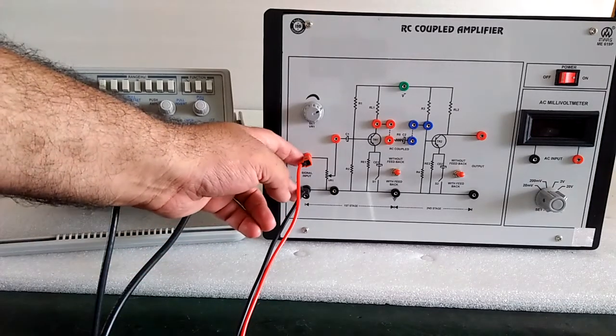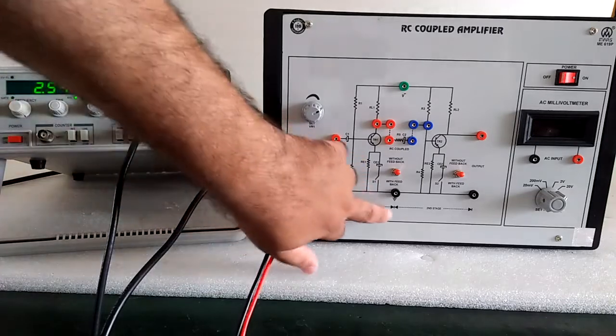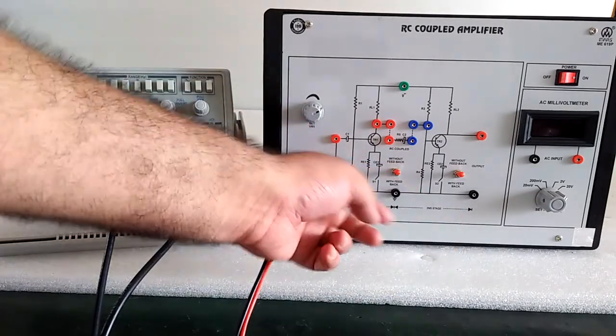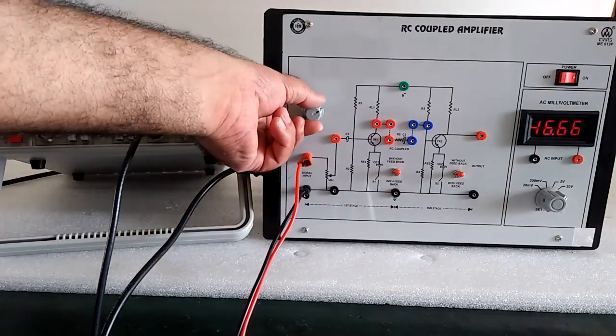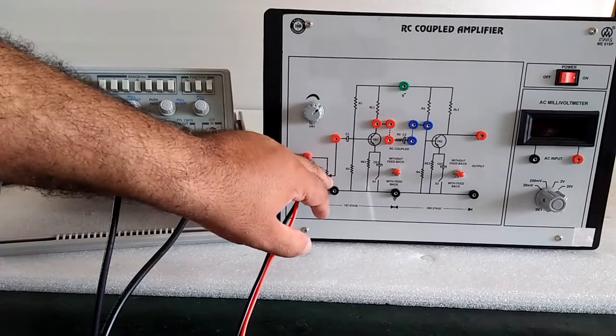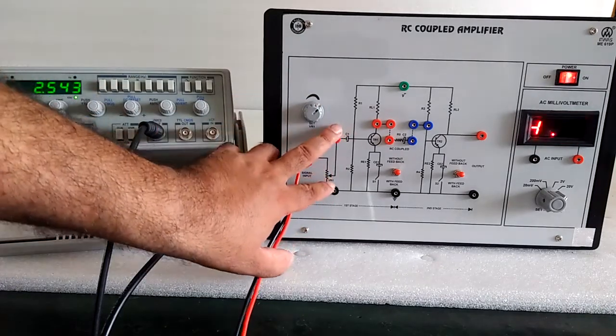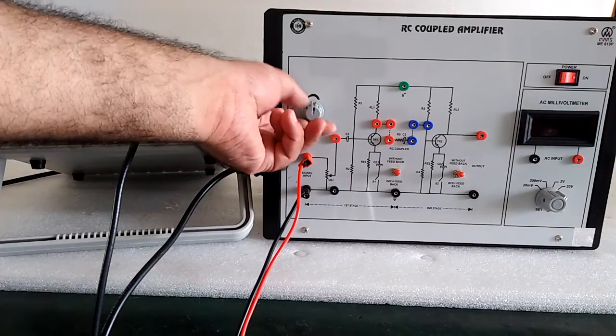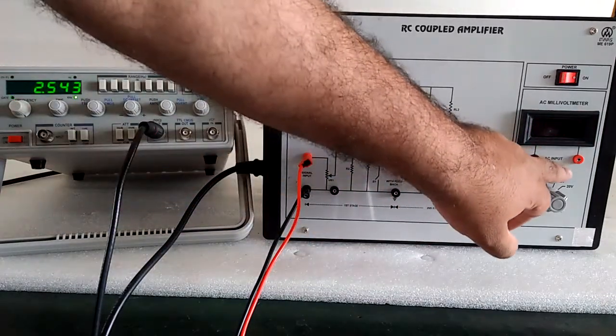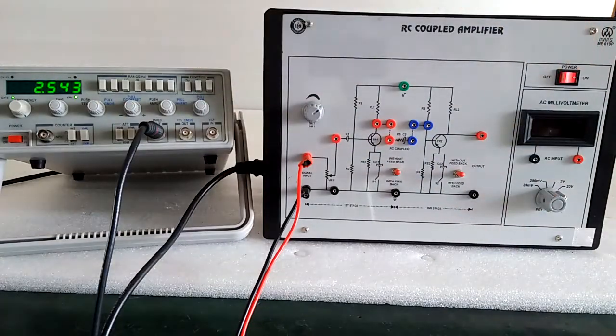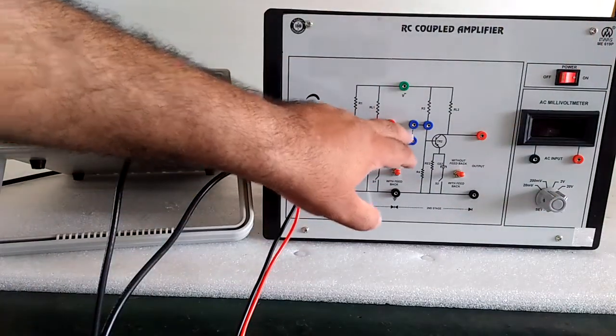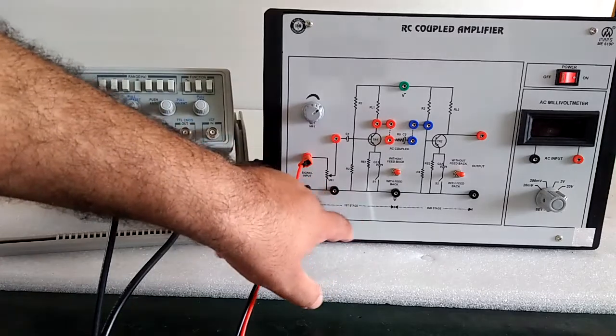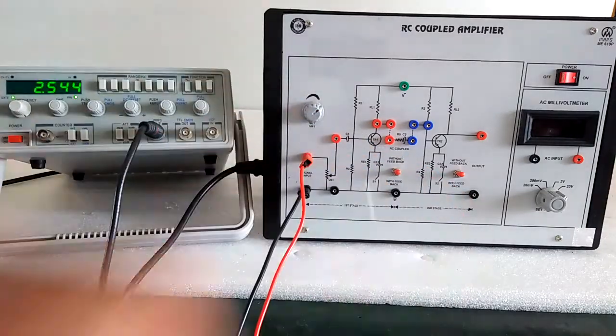Here is the input, here is the first stage, here is the second stage. This is potentiometer for voltage selection. Here AC output, main is to connect first stage to second stage.